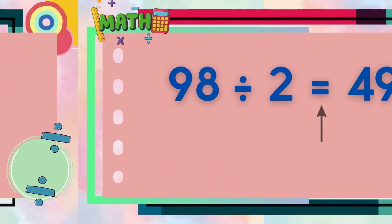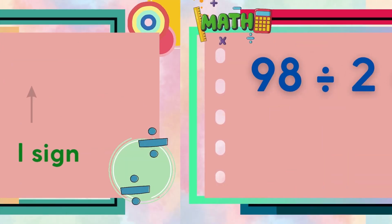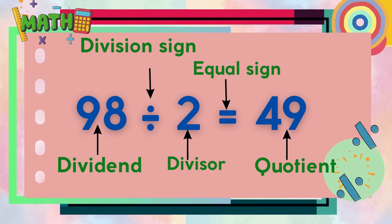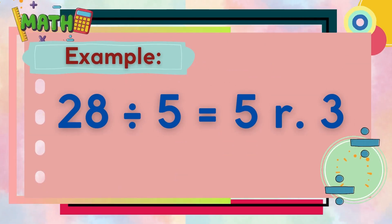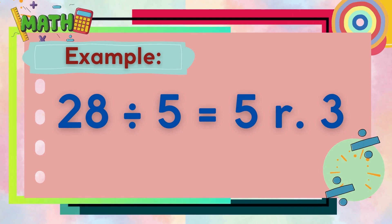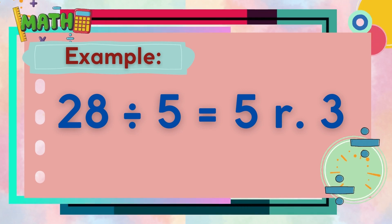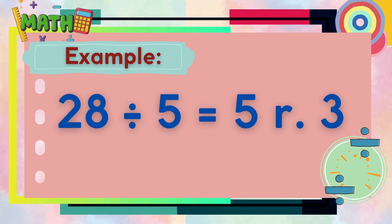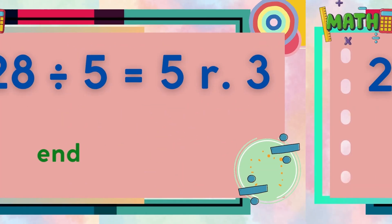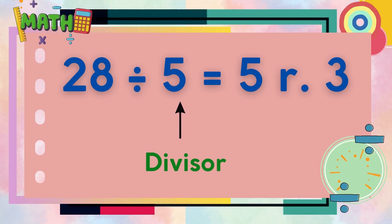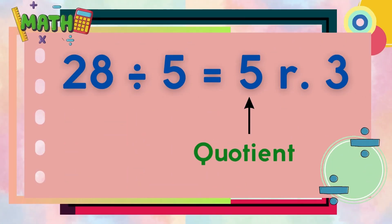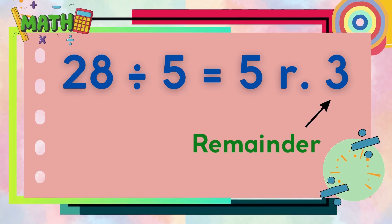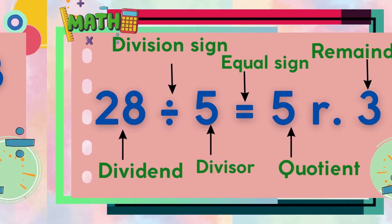Next is the equal sign, and 49 is the quotient. Let's have another example, this time with a remainder. 28 is the dividend, 5 is the divisor, the quotient is 5, and this time there is a remainder which is 3.